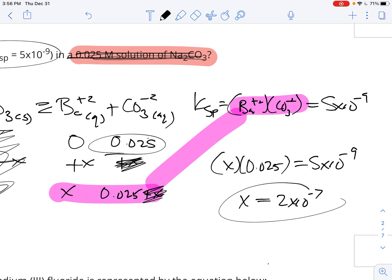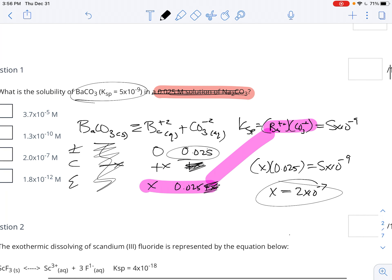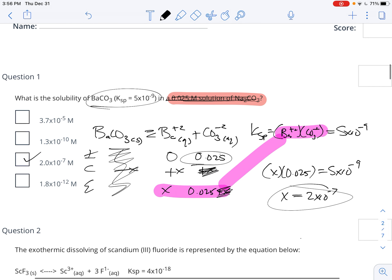And that should be your answer there. So the whole idea of the common ion effect is that you're going to have one of the two substances here as an initial condition, and that is usually so large that the change for it is going to be inconsequential.